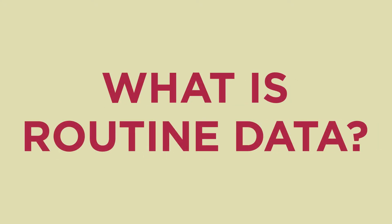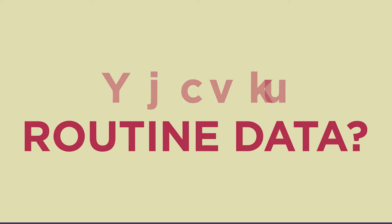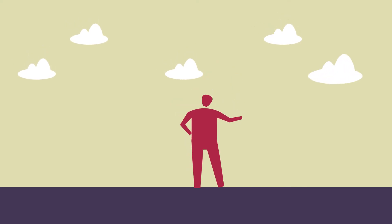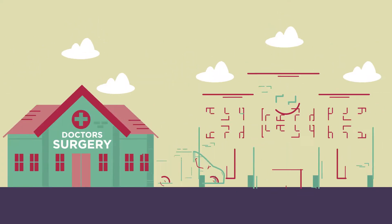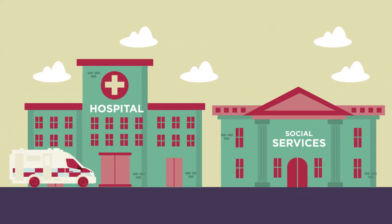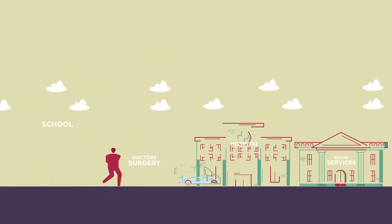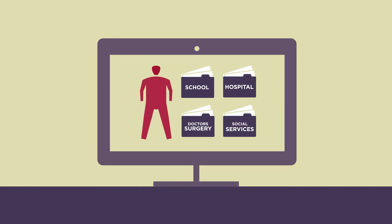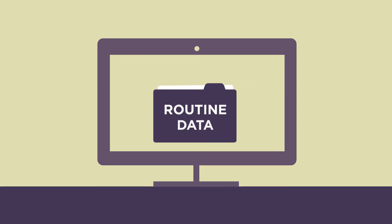Researchers often use and talk about routine data. This video is about what this means. All of us use public services at some point in our lives — this could be schools, doctors, hospitals or social care. When we use these services, information about us is recorded. This is stored on a computer and held by a central public sector organisation. It's called routine data as it is collected routinely when people use public services.